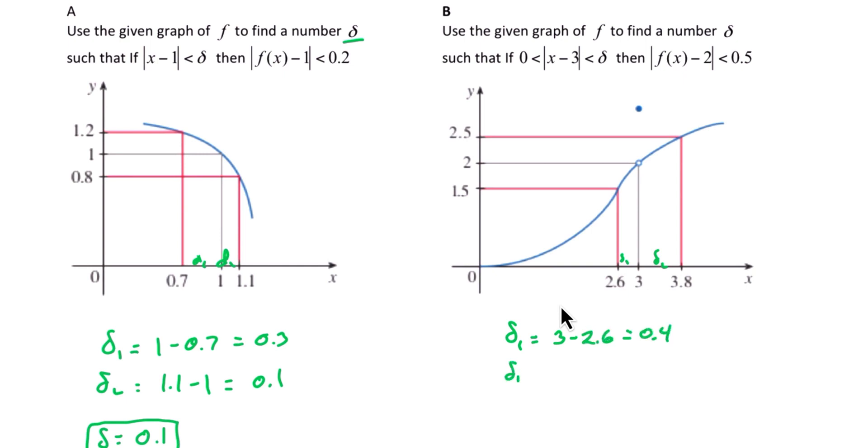Delta 2 is 3.8 minus 3, which is equal to 0.8. And we simply want the smaller of those. So the delta that we're looking for is 0.4.